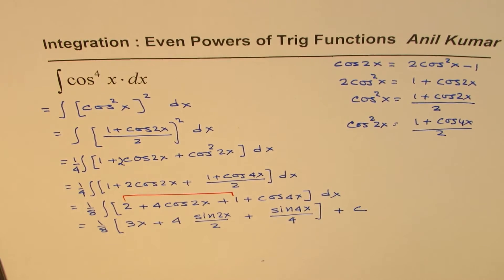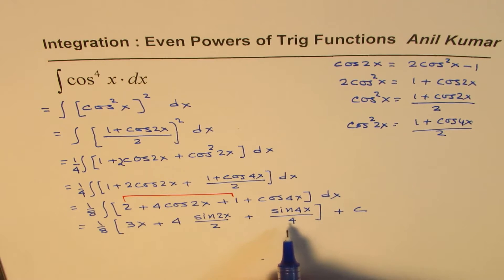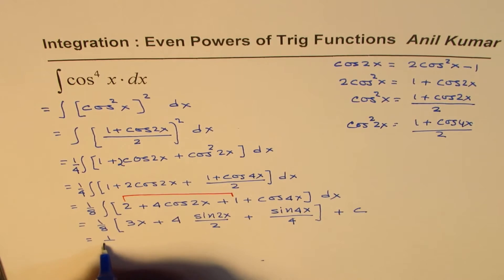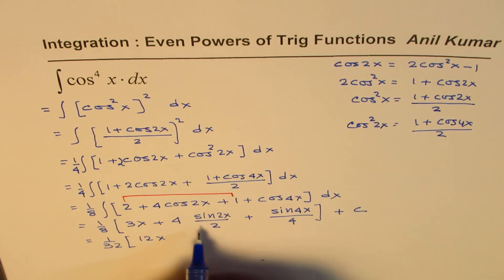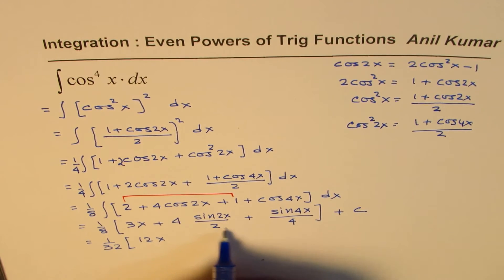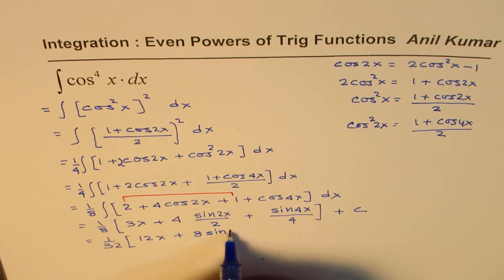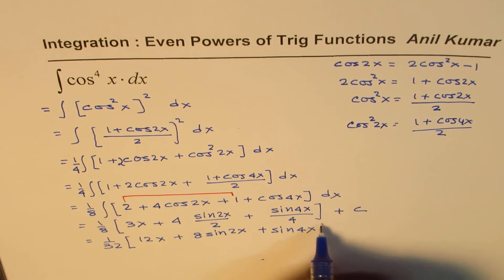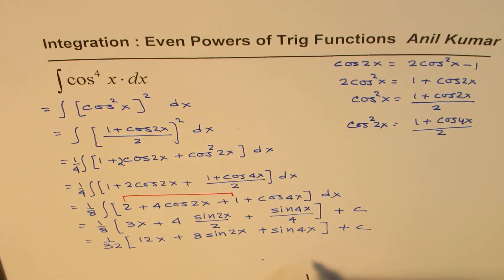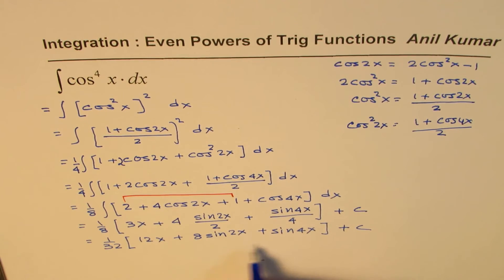Plus c. We can factor out 4 and write this as 1/32(12x + 8sin(2x) + sin(4x)) + c. That's the final result for this integral.